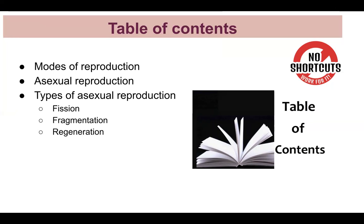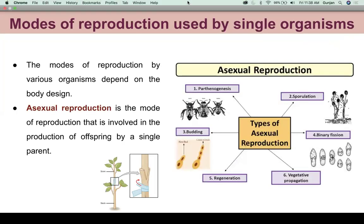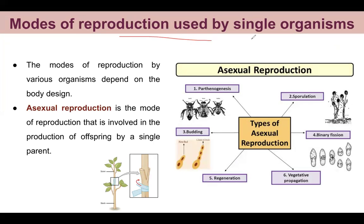Coming back to this video — today we are going to talk about how many modes of reproduction can happen. The first thing that comes up is asexual reproduction. The mode of reproduction used by single organisms — what single organisms can produce through a mode of reproduction?